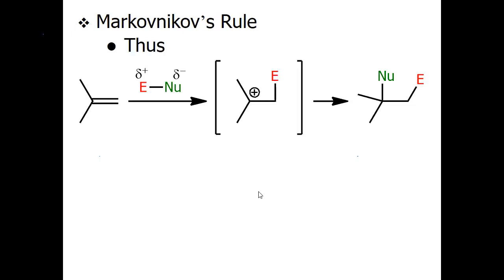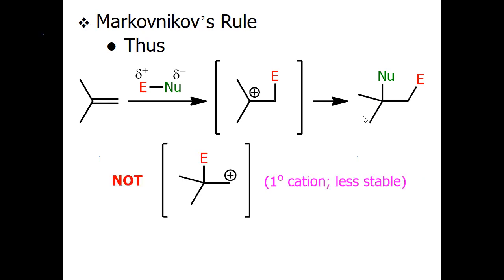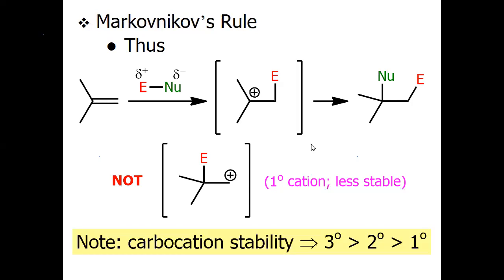Here is another example. With an unsymmetrical alkene, the pi electrons attack the electrophile, and there are two possibilities: formation of a tertiary carbocation or a primary carbocation. Since the tertiary carbocation is more stable, the nucleophile attacks the highly substituted carbocation rather than the less substituted one, as explained by Markovnikov's rule.